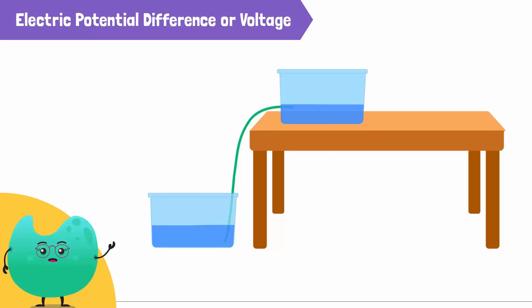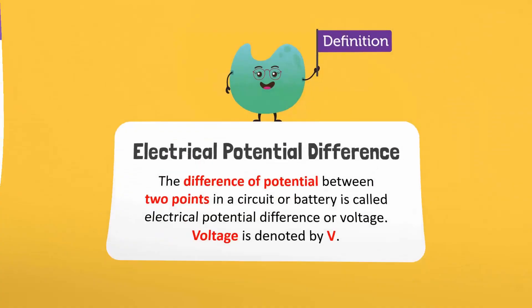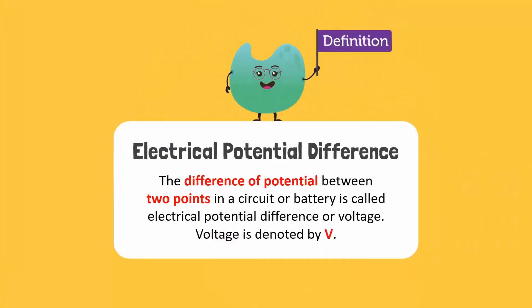Water cannot flow from the lower can to the upper can. Similarly, current flows from higher electric potential to lower electric potential. The difference of potential between two points in a circuit or battery is called electrical potential difference or voltage.